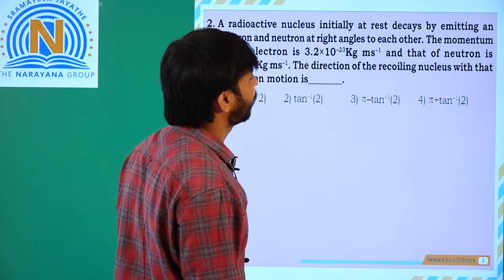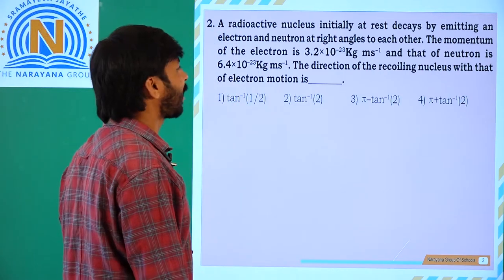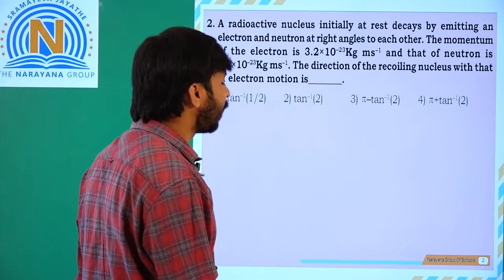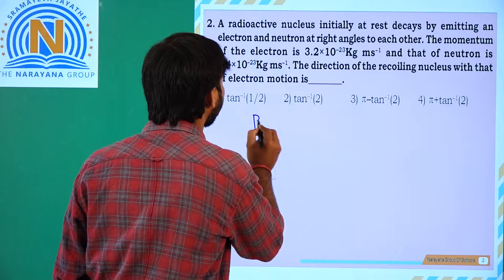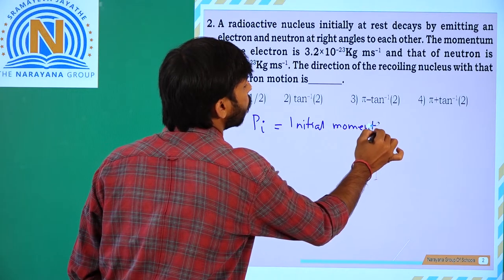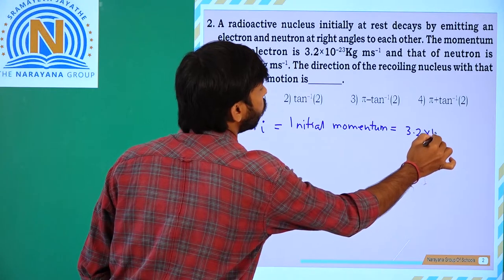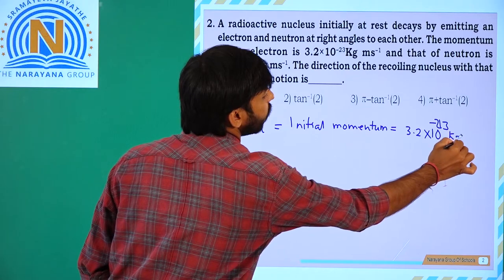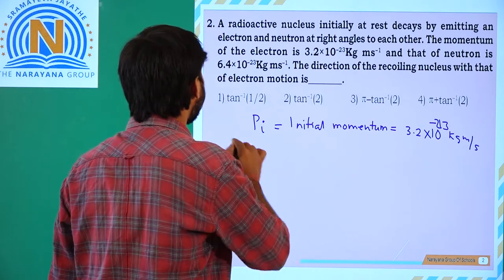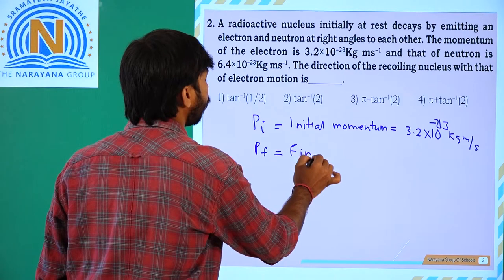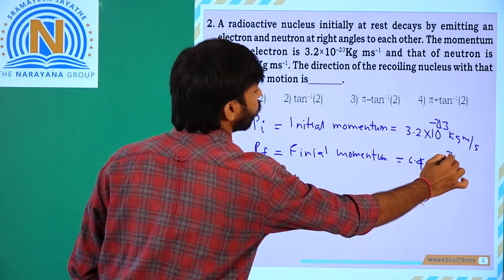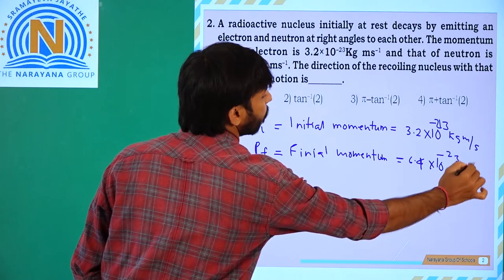A radioactive nucleus initially at rest decays by emitting an electron and a neutron at right angles to each other. The momentum of the electron, Pi, the initial momentum, is 3.2 into 10 to the power of minus 23 kg·m/s. The neutron's final momentum is 6.4 into 10 to the power of minus 23 kg·m/s.